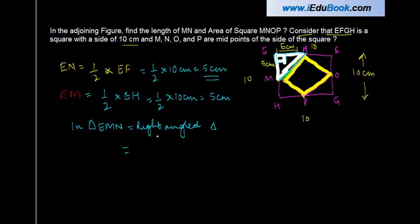So effectively, triangle EMN is a right angle triangle. If it is a right angle triangle, then the hypotenuse, which is MN squared, should equal EM squared plus EN squared. This is the property of a right angle triangle which says that hypotenuse squared equals base squared plus perpendicular squared.